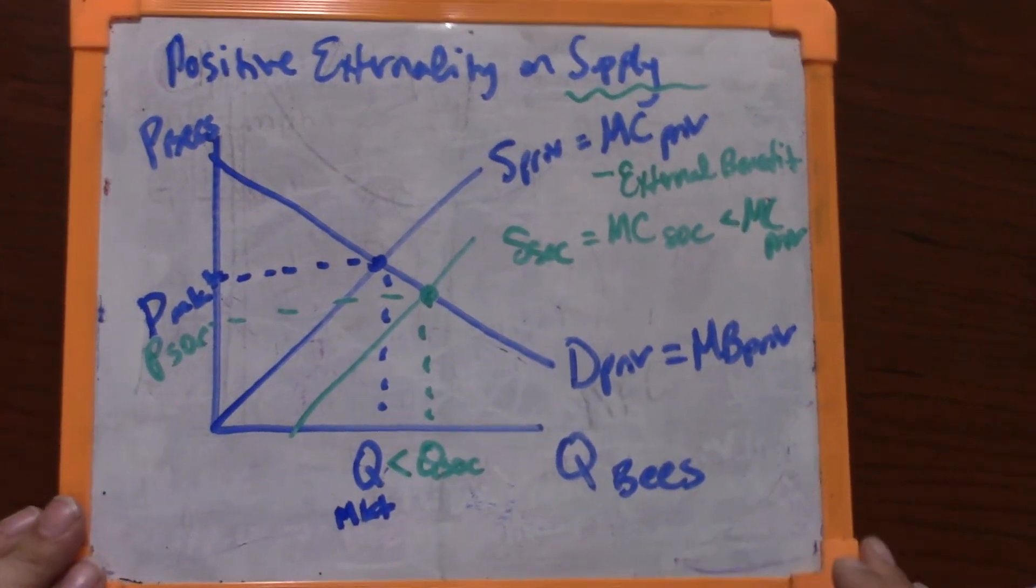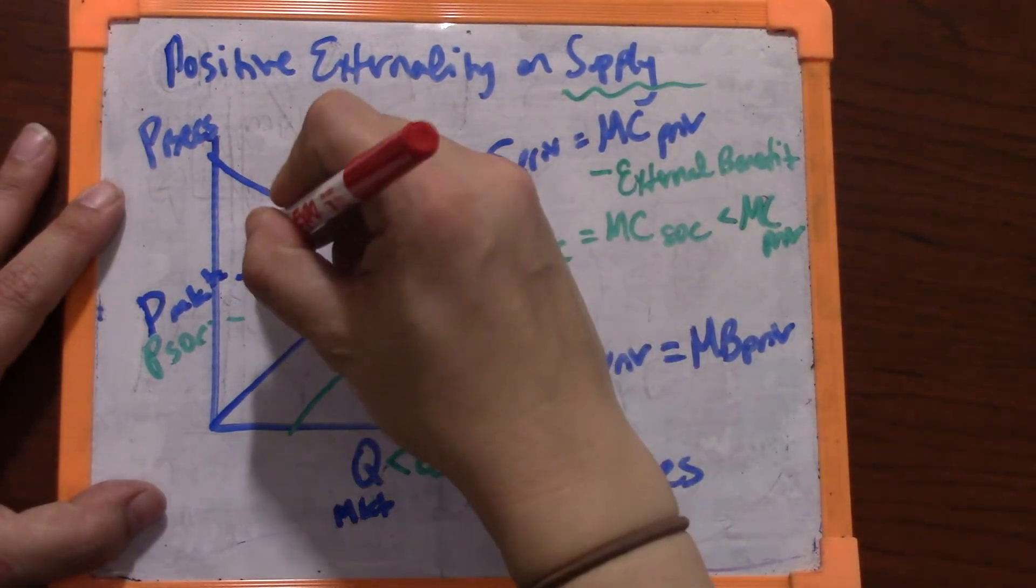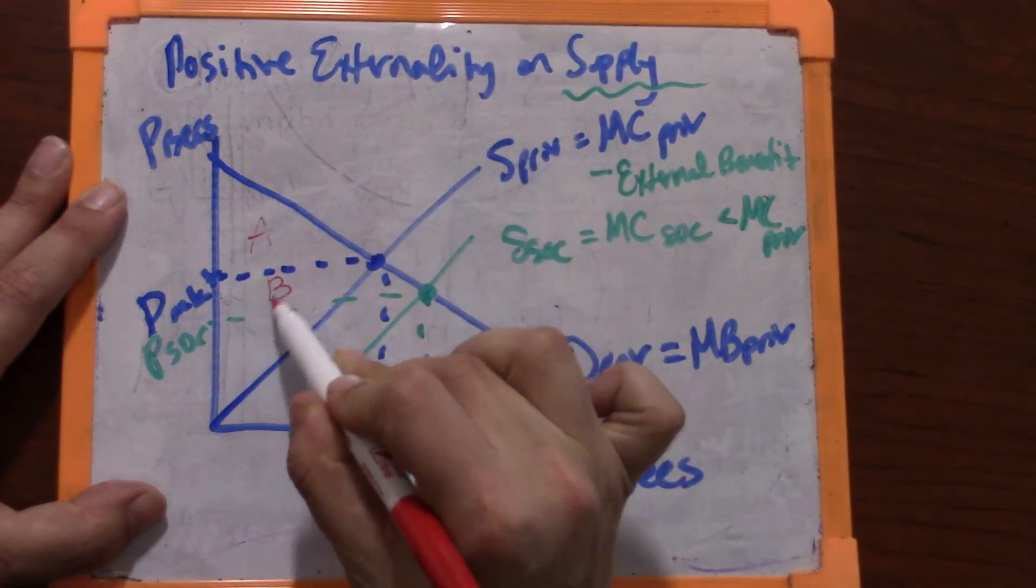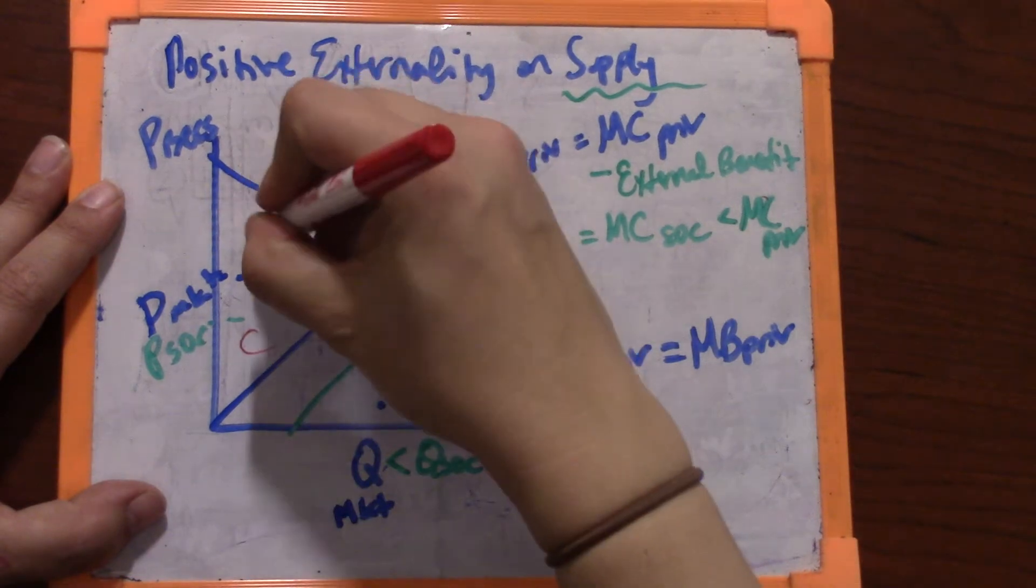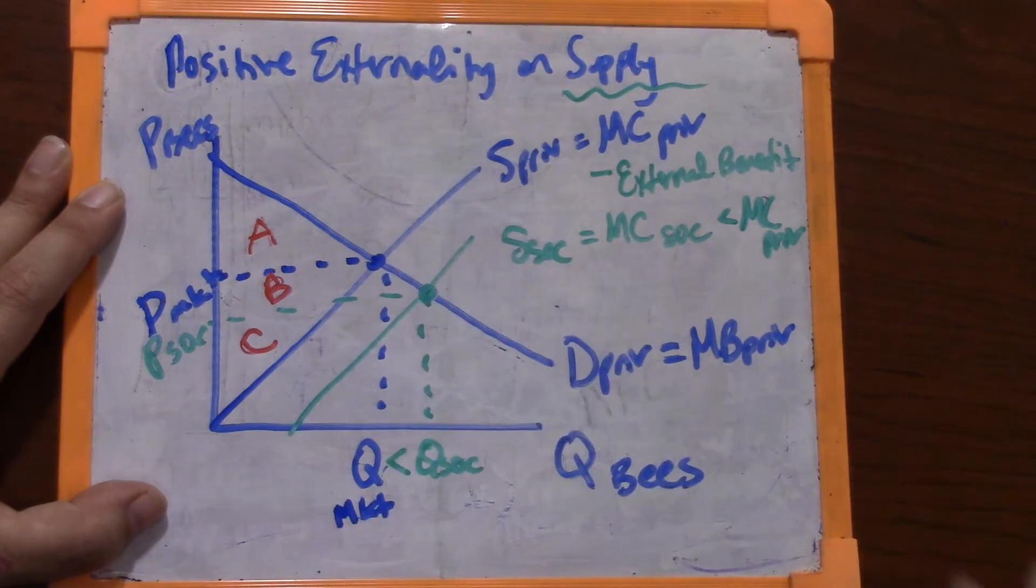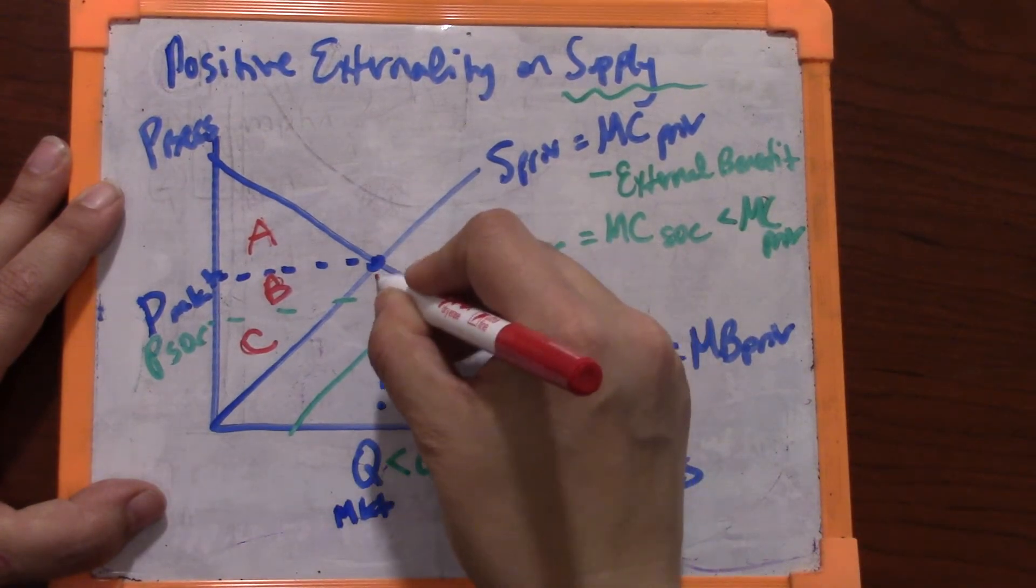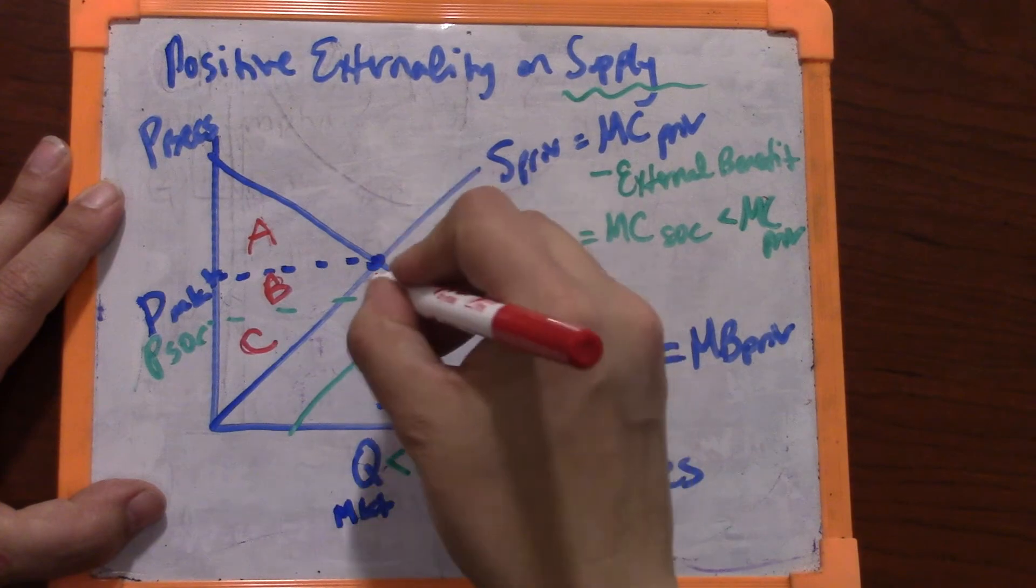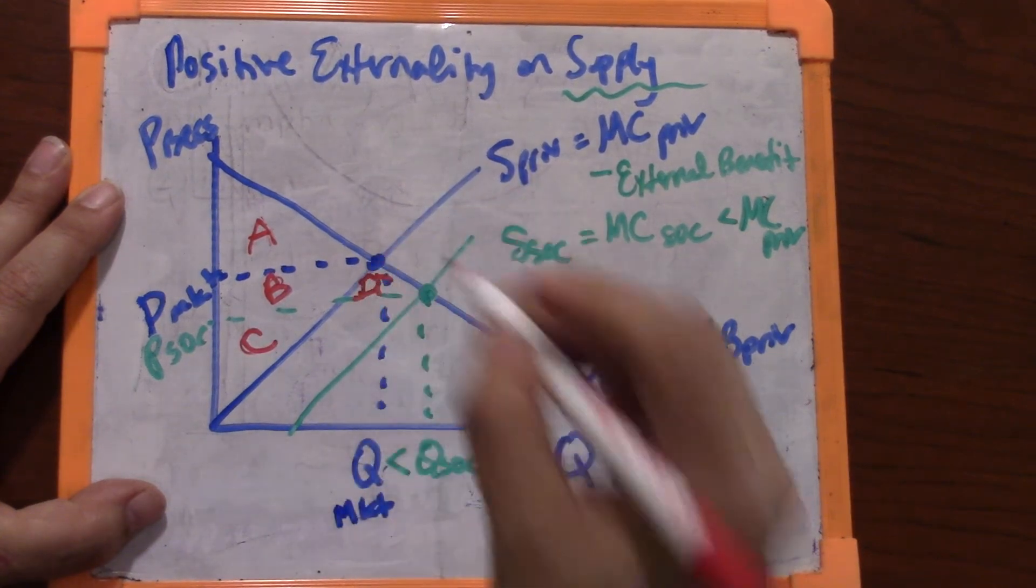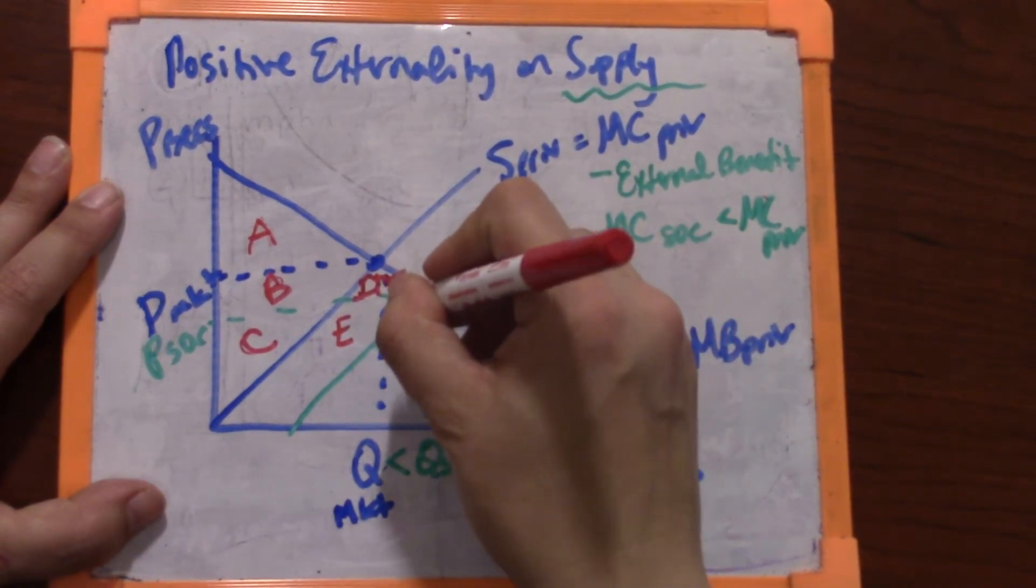And so now we need to reflect the changes in consumer surplus, producer surplus, and deadweight loss that are brought about by this externality. I'm going to put a letter on everything in the big blue triangle of market consumer and producer surplus and also these letters right here because these are going to become important. D, it turns out, is going to move together. So we'll do one there, one here, one here, one here, and one here.